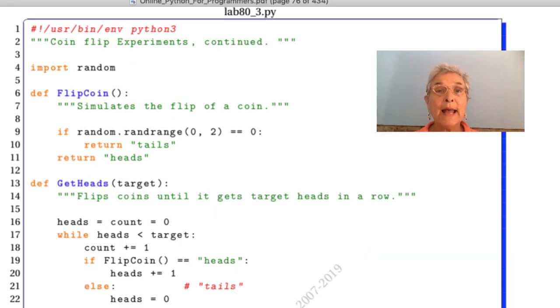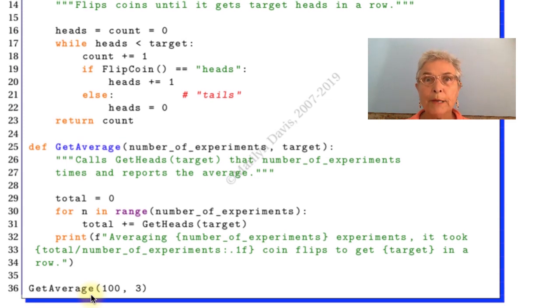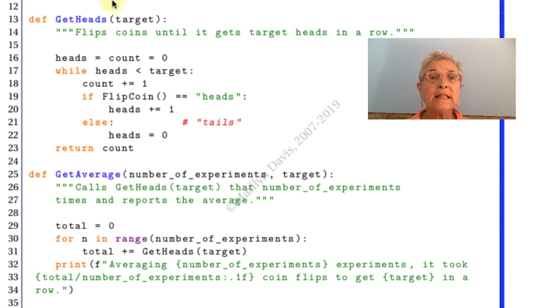Here we see lab 80 underscore 3. And the first thing we see is that I have all this duplicate code. Oh, I bet you wish we could import the answer to 80 underscore 2. That would be much better. But that's another issue. We'll have to learn that soon. We see on line 36 that I call GetAverage of 100, 3. GetAverage takes in the number of experiments and my target. Well, that's breaking the style guide. Please don't fire me. Okay, so we're supposed to get heads a certain number of times in a row. Perhaps three.